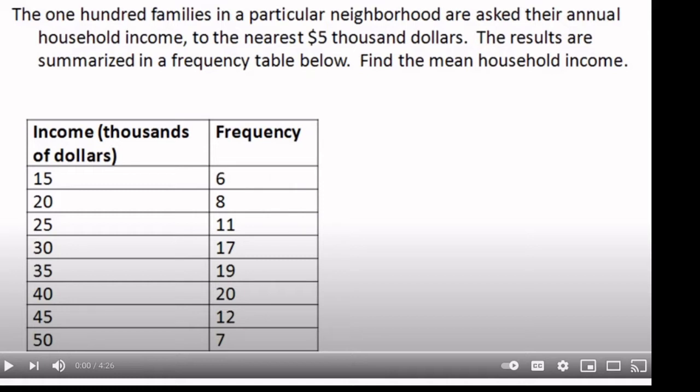The second line says that there are some people that earned $20,000, or at least rounded to the nearest $5,000, and that there are eight households in the sample that earned that amount.